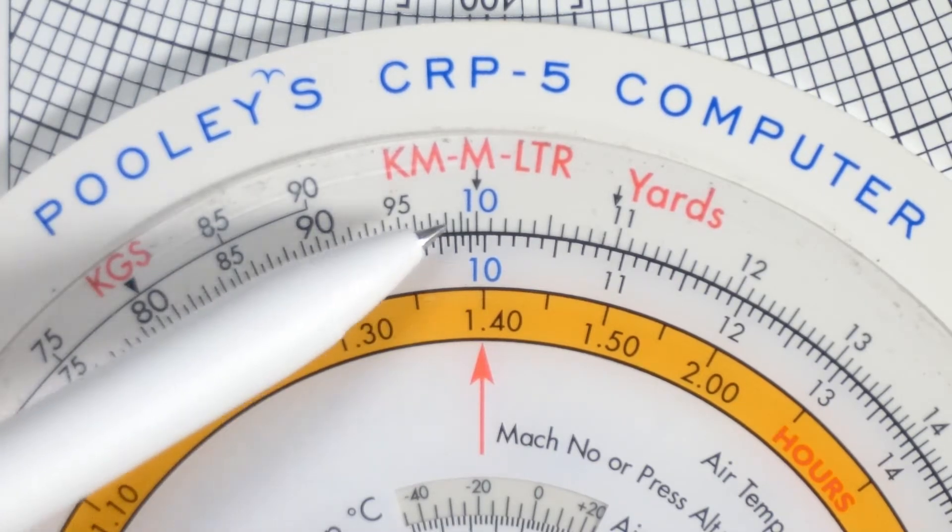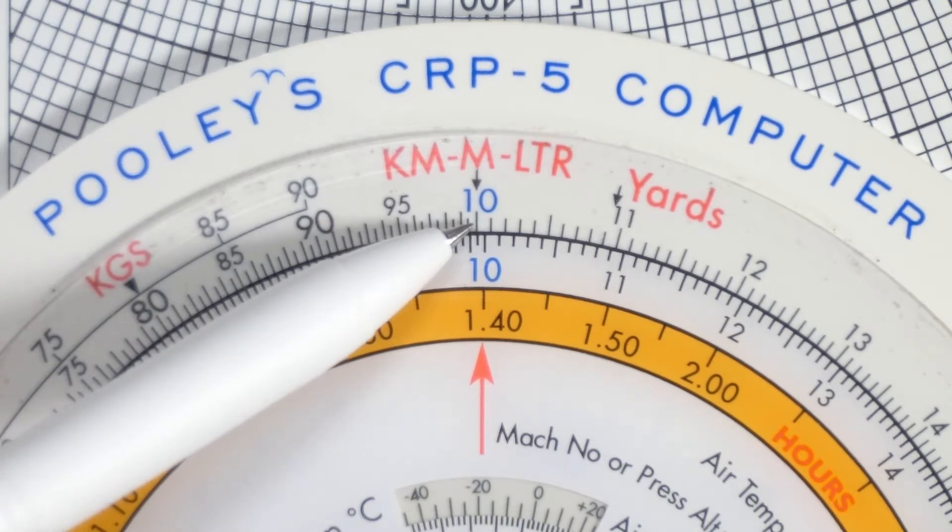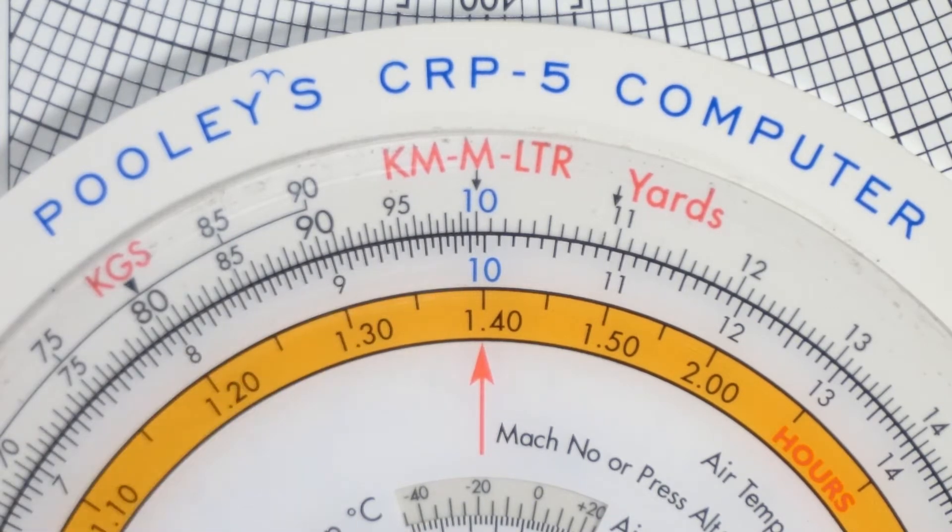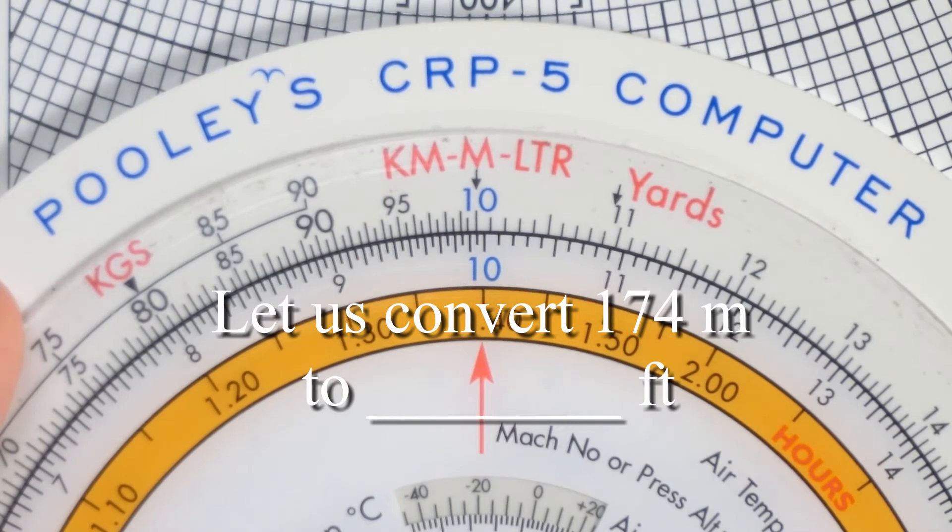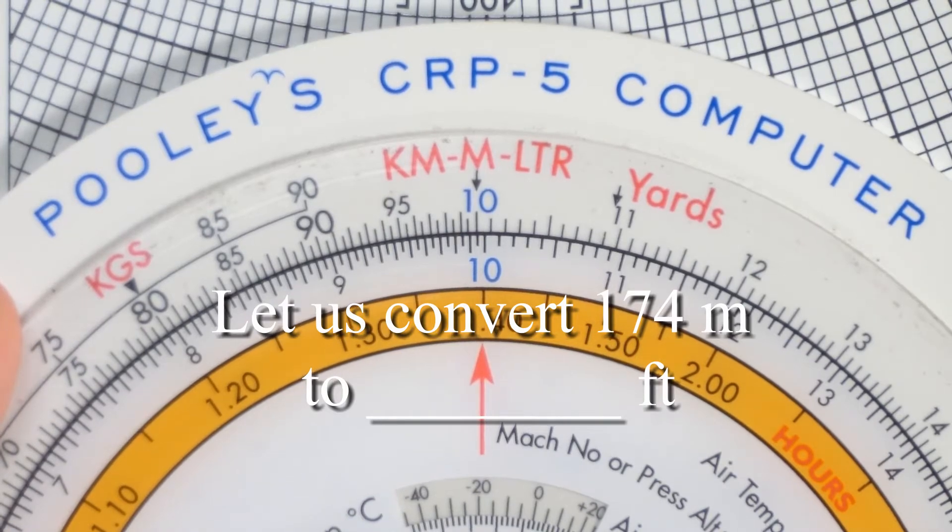One meter is equal to 3.28 feet, so 10 meters would be 32.8 feet and 100 meters would be 328 feet. What if you want to put a different number? Let's say 174. So let's put 174 into the scale.